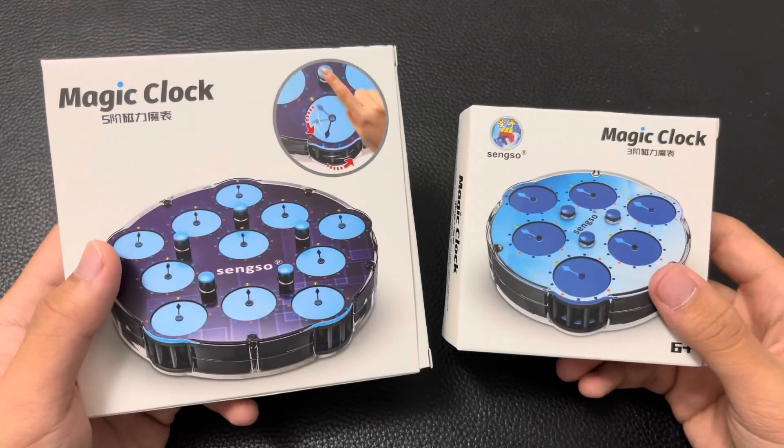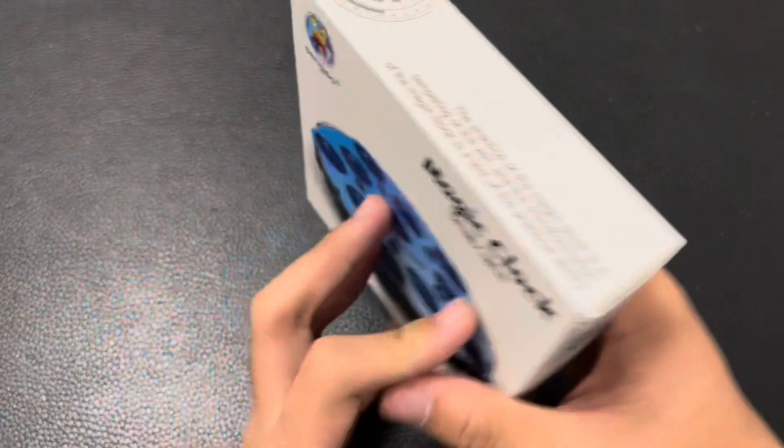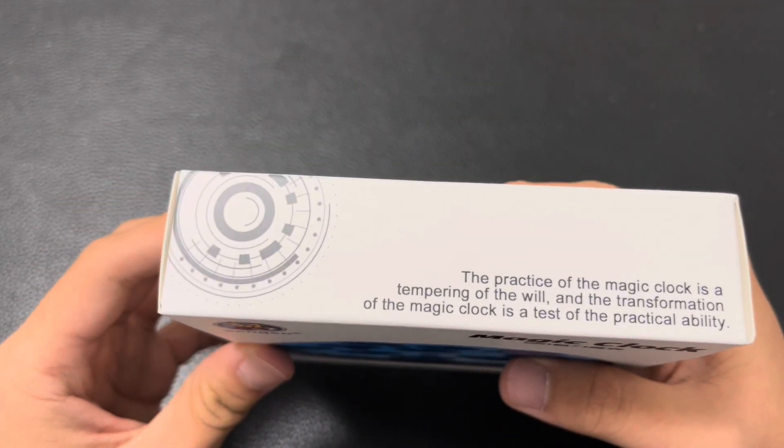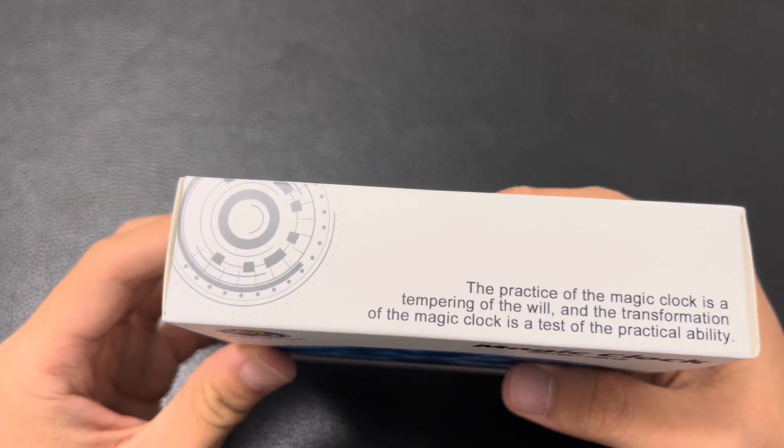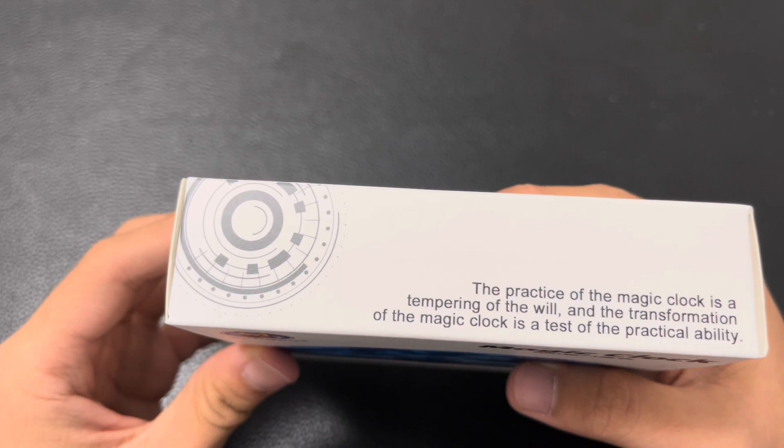So here's a good look at the two new clocks, and yes, these are both magnetic. Also, the practice of the magic clock is a tempering of the will, and the transformation of the magic clock is a test of the practical ability.